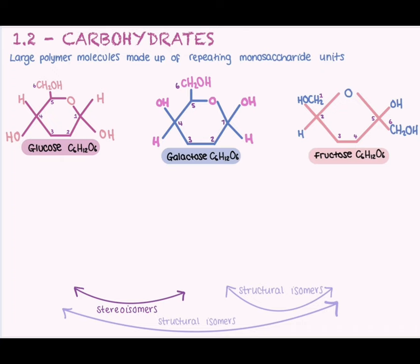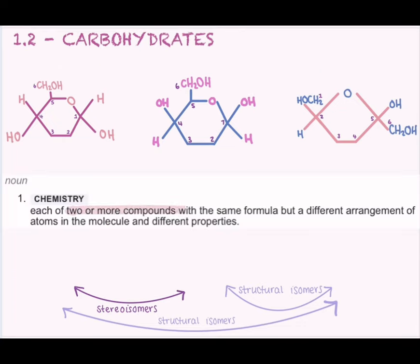What's important that we do know, however, is that these three monosaccharides are isomers. The definition of an isomer is where two or more compounds have the same molecular formula, but the arrangement of the atoms is different. The molecular formula of all three of these monosaccharides is C6H12O6, so this means that they have six carbons, 12 hydrogens, and six oxygens each.